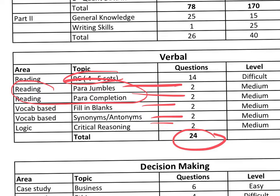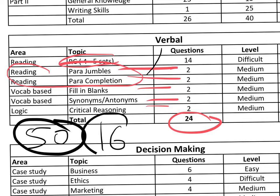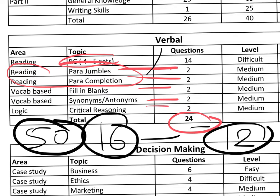I recommend spending around 50 minutes on the verbal section. Try to solve around 16 questions out of 24 on the maximum side, and a minimum of 12 questions — so at least half the paper. 50 minutes is more than sufficient to handle all the medium-level questions present in the exam.